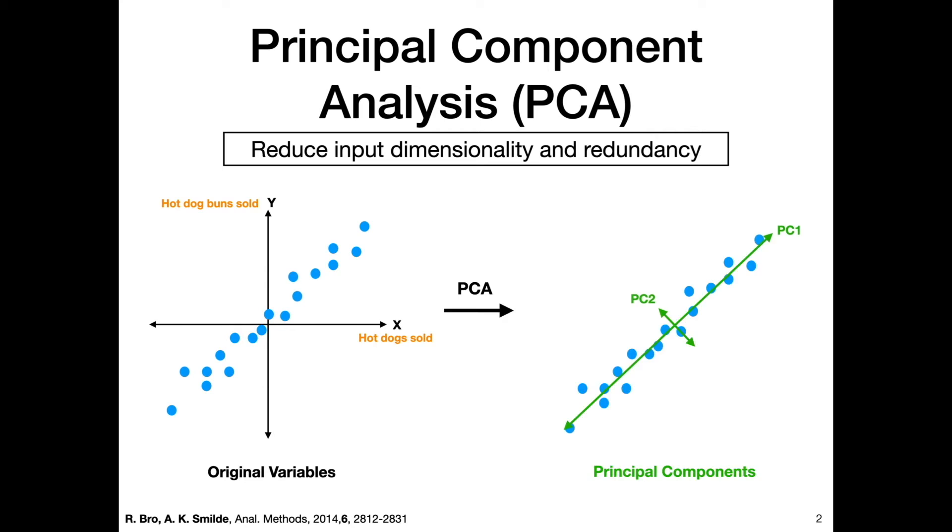So it may be practical to represent this underlying information instead of through two variables, through just one variable. We can transform our axes from this x and y axis to a new set of axes—we'll call them PC1 and PC2—and then if you want to take it a step further, you can just remove PC2 and operate with one variable.